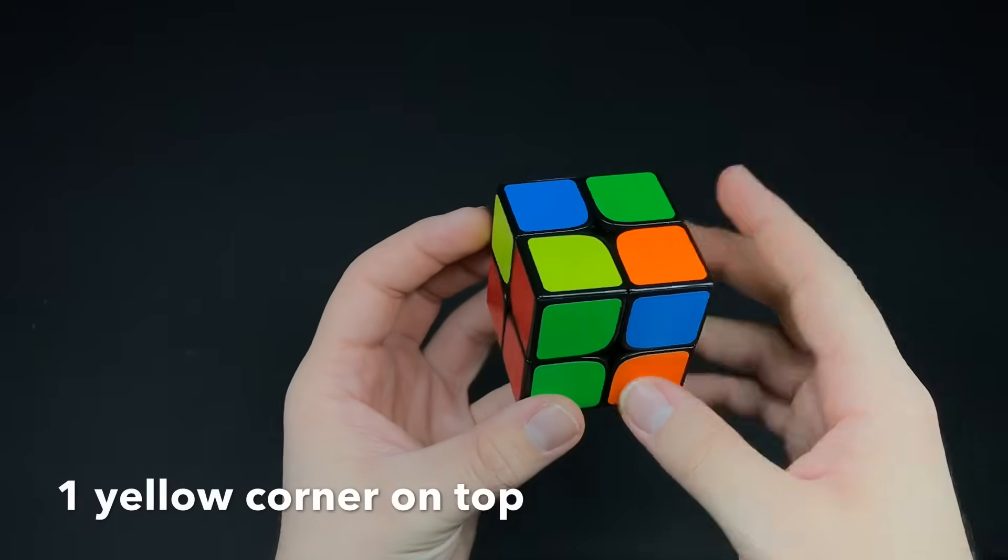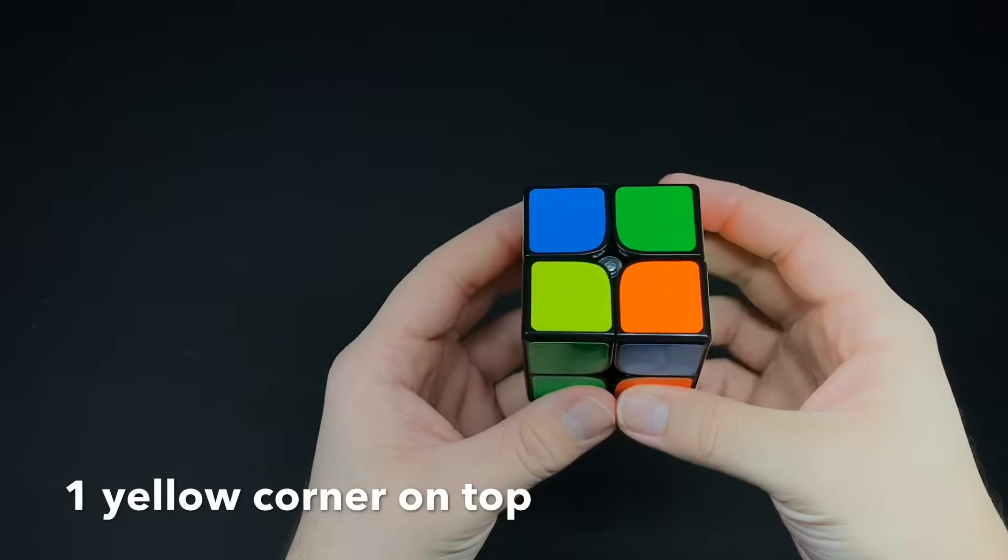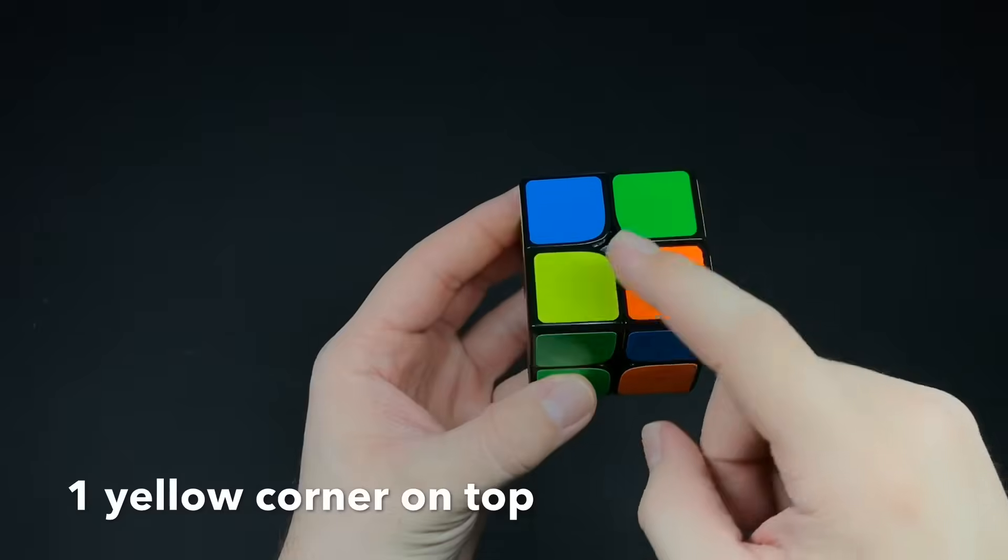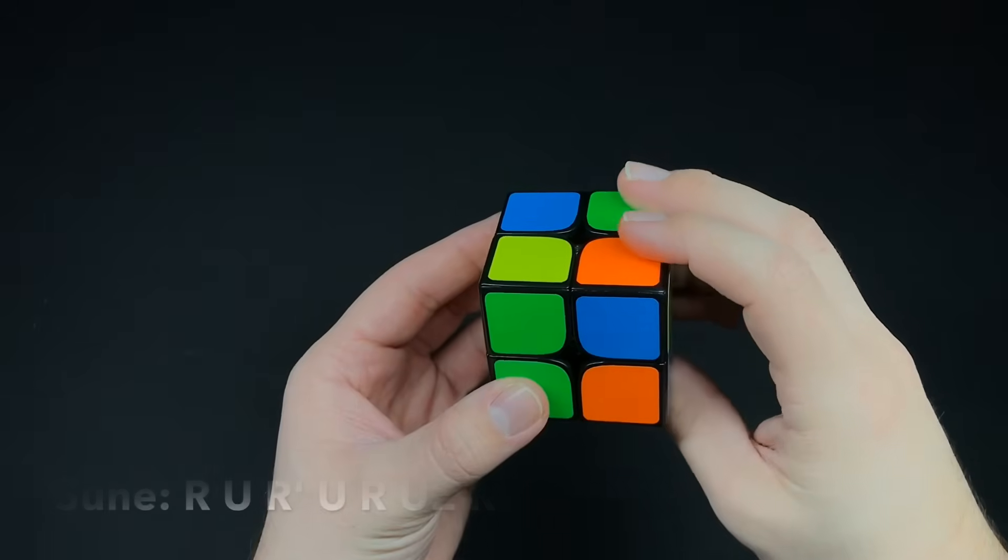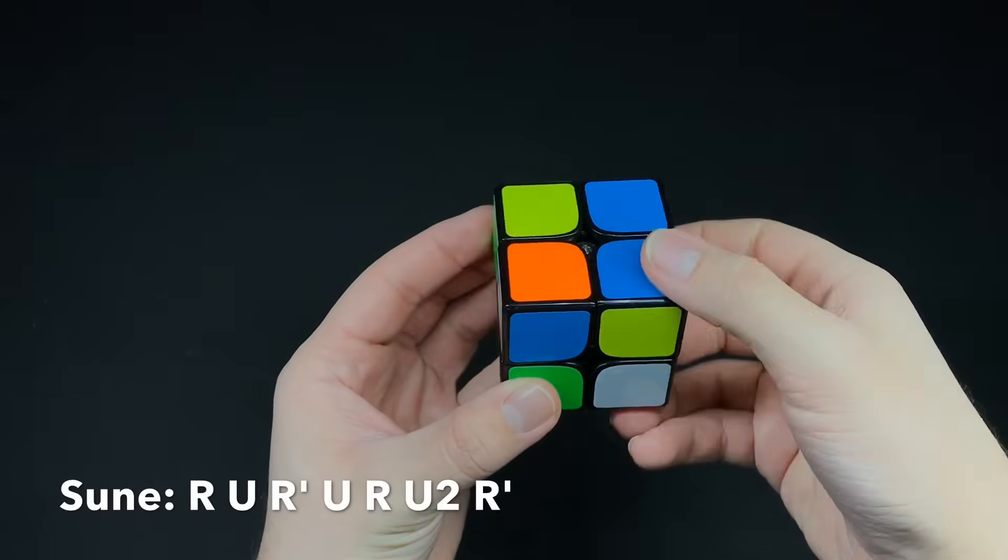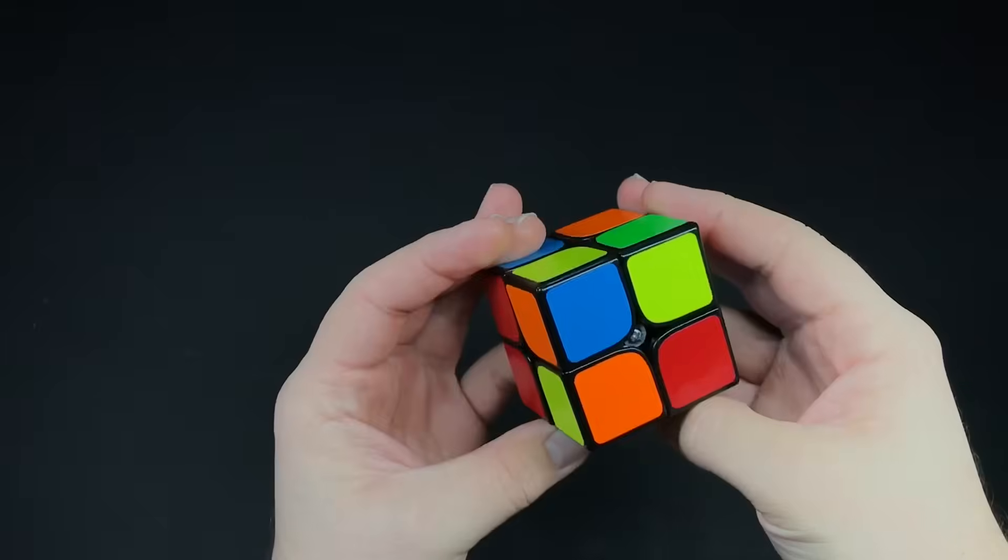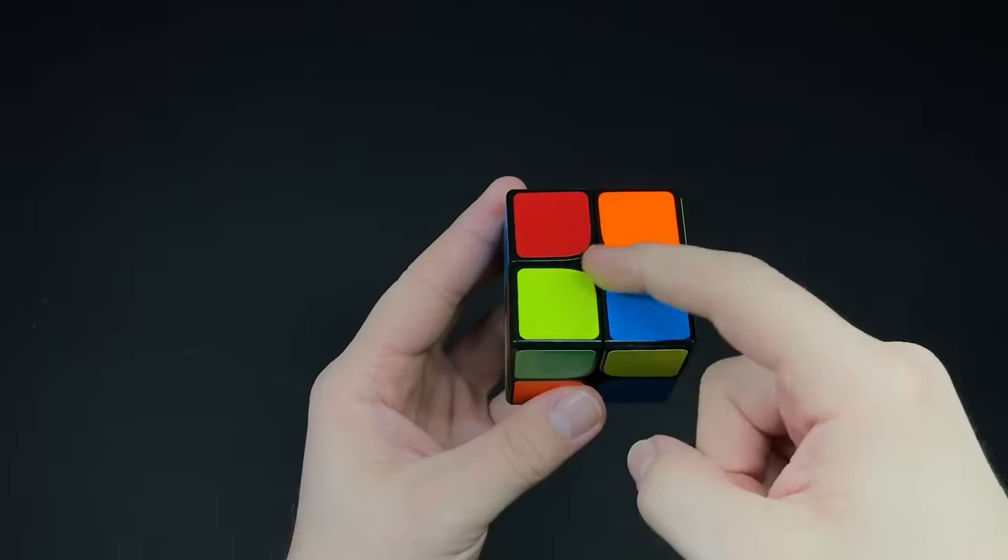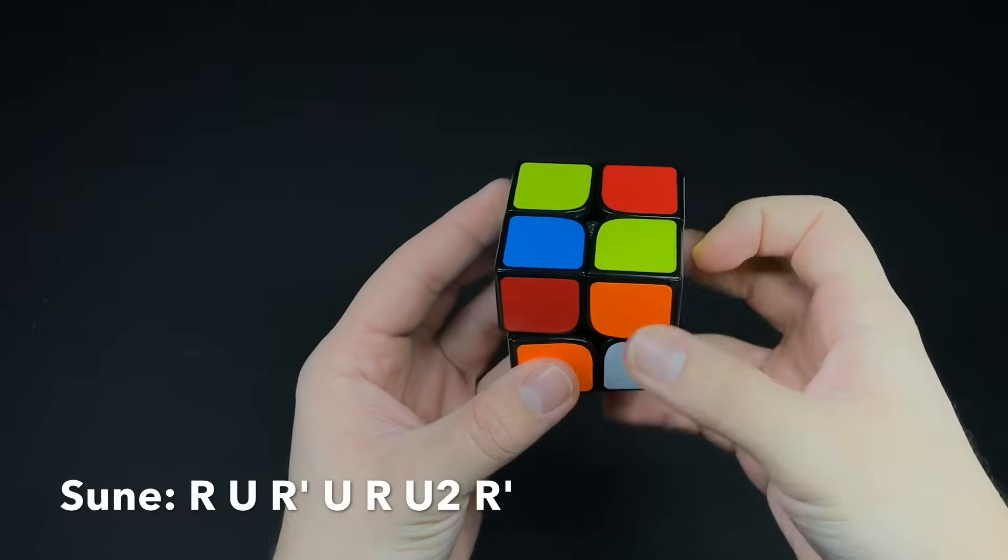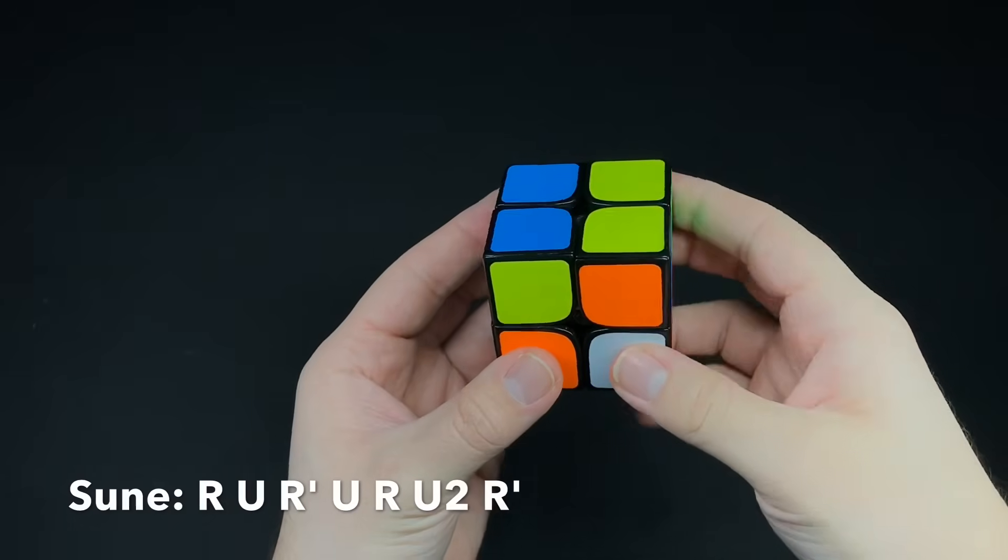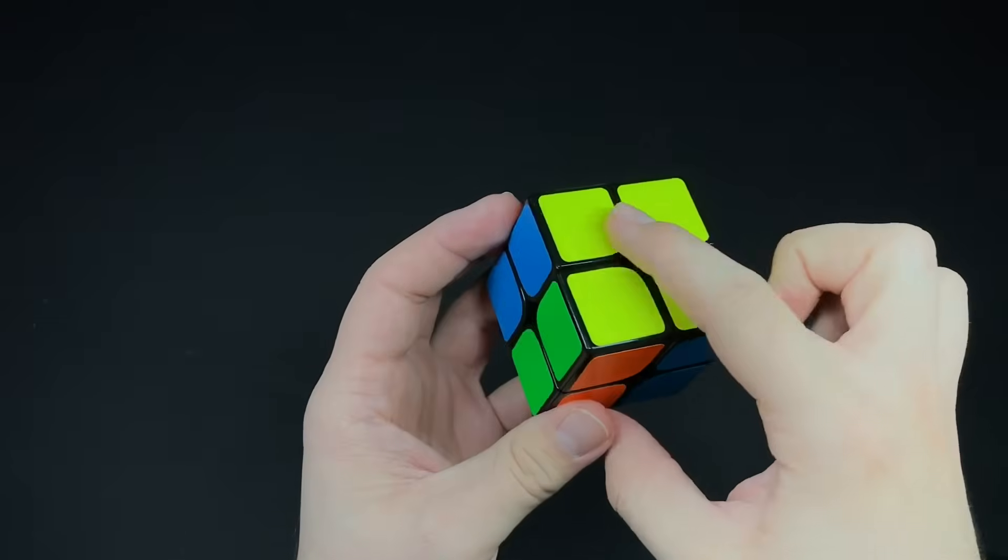Now I look on the top layer, and I only have one. You place this one being on the top in the left corner, and then you do that Sune algorithm again. If that didn't solve it, you simply do it again. Put it in the front left corner, do the algorithm again. And that's how you get the top layer.